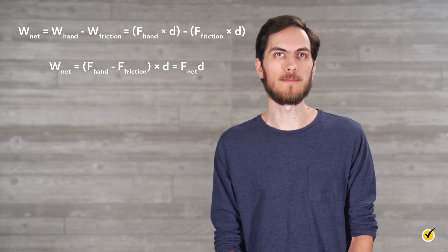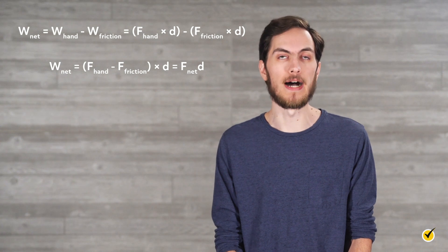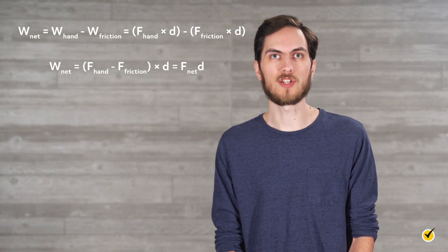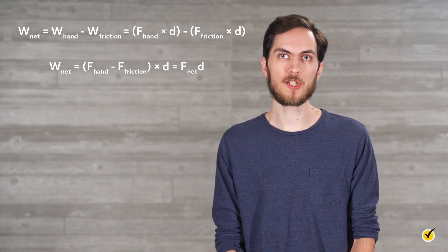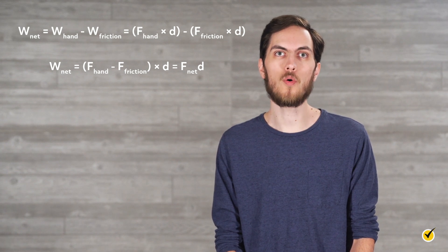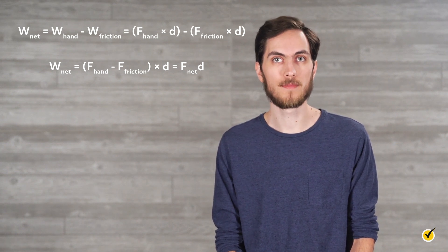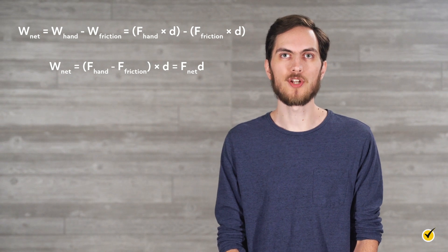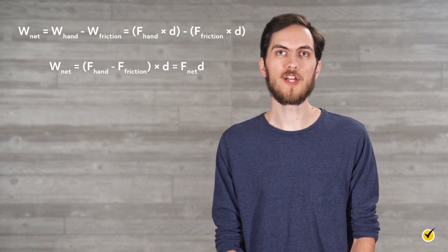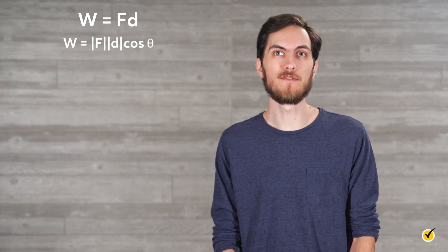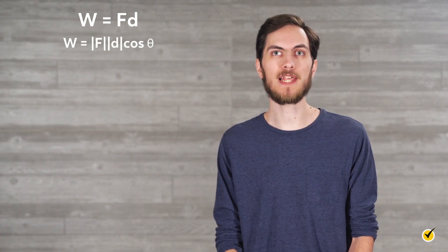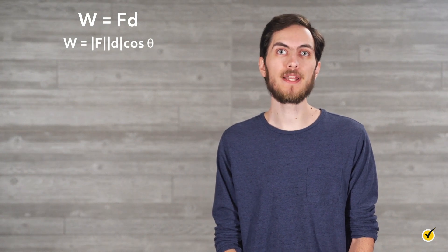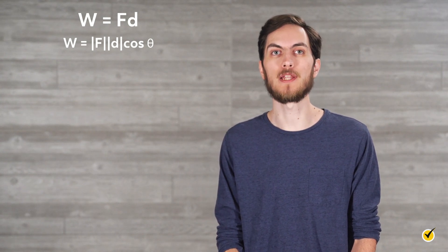Sometimes the force applied to an object is not in a direction parallel to the motion of the object at all. While work is a scalar quantity, the force and displacement of an object are vectors, which means they always have a magnitude and a direction. Only the force component that's in the direction of motion will contribute to the work. The equation w equals f times d is actually a special case in the more general form of the equation for work is work equals the magnitude of force times the magnitude of displacement times cosine of theta, where theta is the angle between the force and displacement vectors.